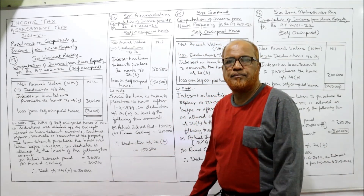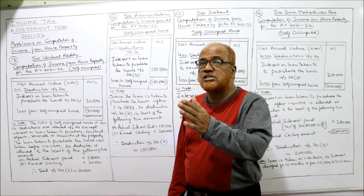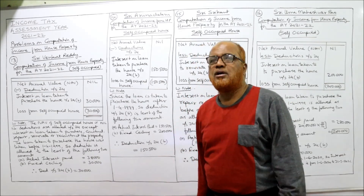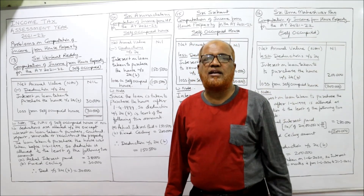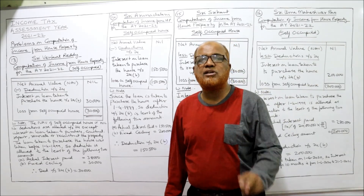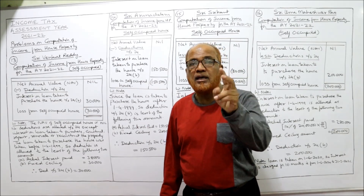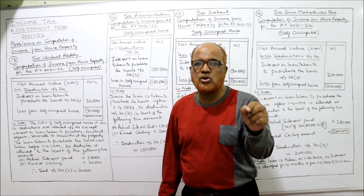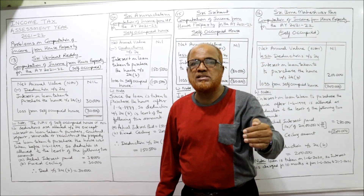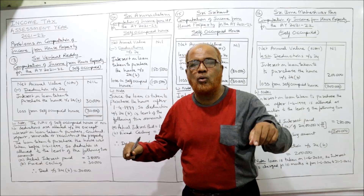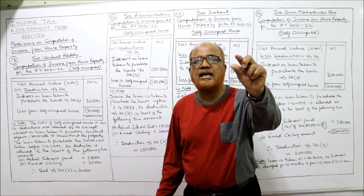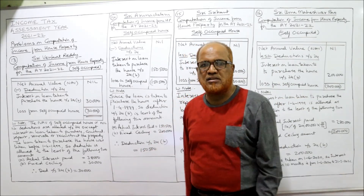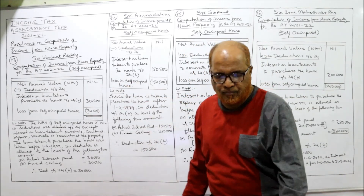If the house is purchased before 1/4/1999, the ceiling is ₹30,000. If the house is purchased or constructed after 1/4/1999, the ceiling limit is ₹2 lakh. However, if the loan is taken for repair, renovation, or reconstruction, the ceiling limit is ₹30,000 whether before or after 1/4/1999. That's the end of Problem 13.